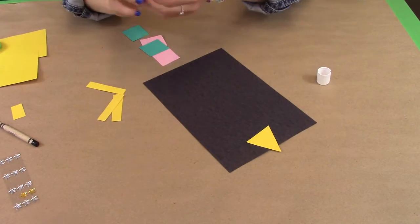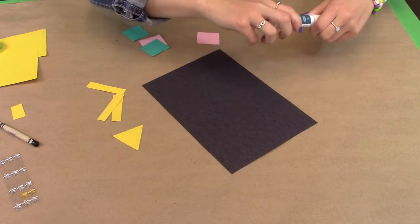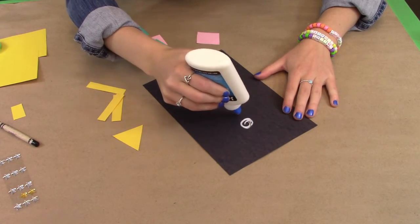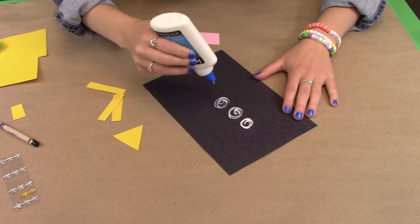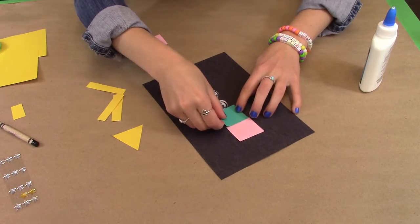Once you have all these shapes cut out, you can start gluing. You can use a glue stick, white glue, anything that you have at home. You could even use tape. I'm going to use white glue here, so I'm just going to make some glue spots for each of my squares to start with and glue them down in my pattern.